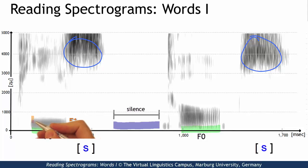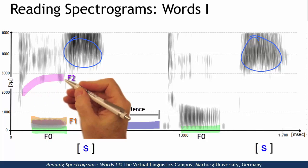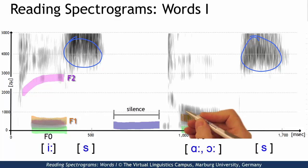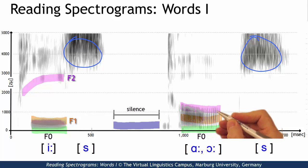The first vowel has a low F1 value and a high F2 value, so it looks like an E. The second vowel must be a low one, that is A or OR, since its first two formants are close together and can be located at around 600 and 1000 Hz.